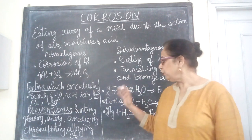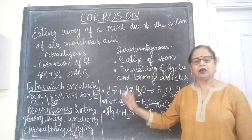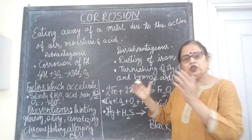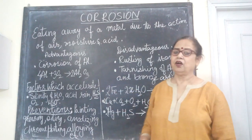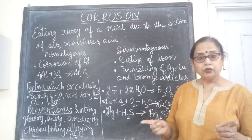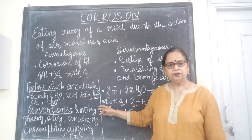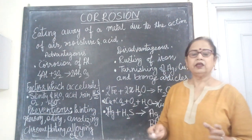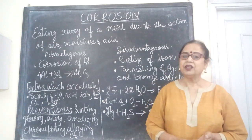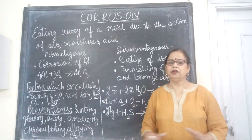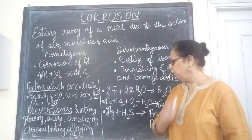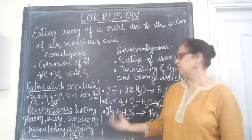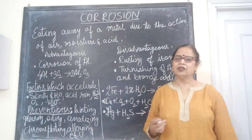To prevent corrosion, we have to protect metals like iron, copper, and silver by preventing their exposure to conditions required for corrosion. Simple methods include painting, greasing, and oiling at home. Agricultural farmers keep their iron tools immersed in oil to prevent corrosion. Commercial processes include anodizing, chrome plating, and alloying. With these methods, corrosion can be effectively controlled. Thank you.